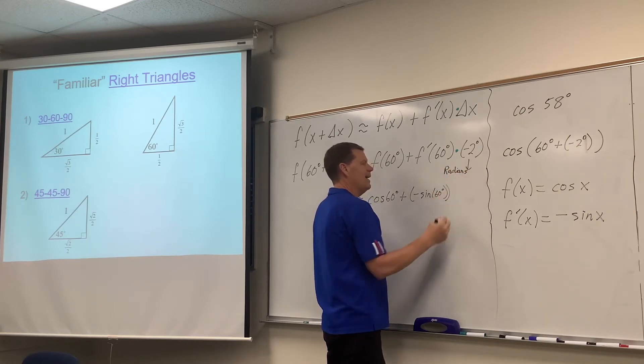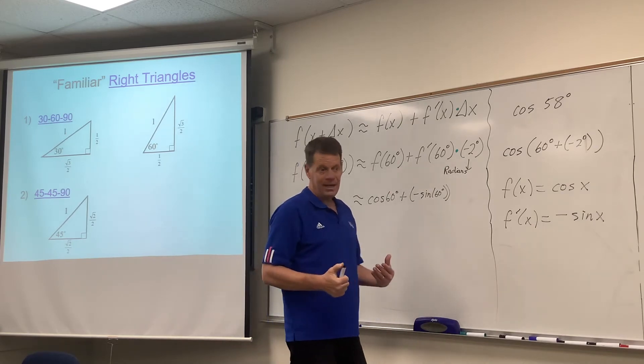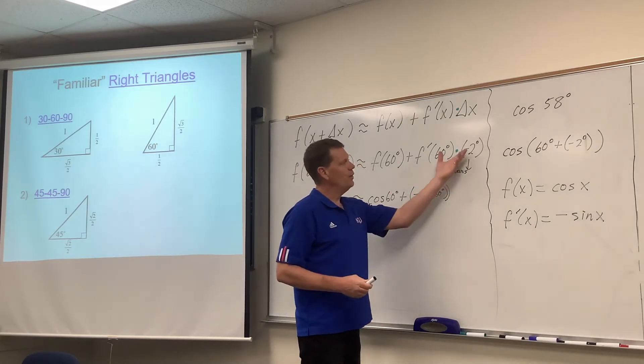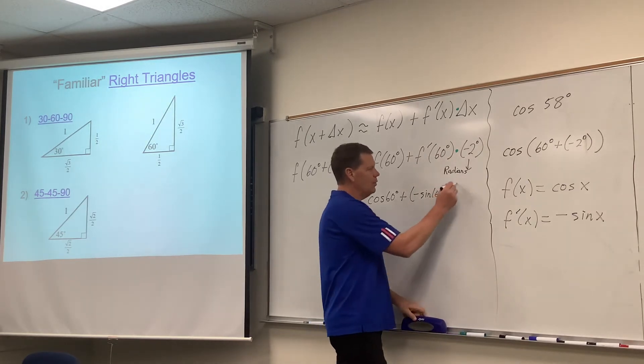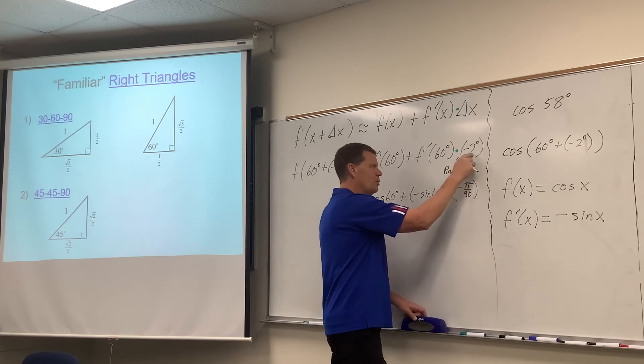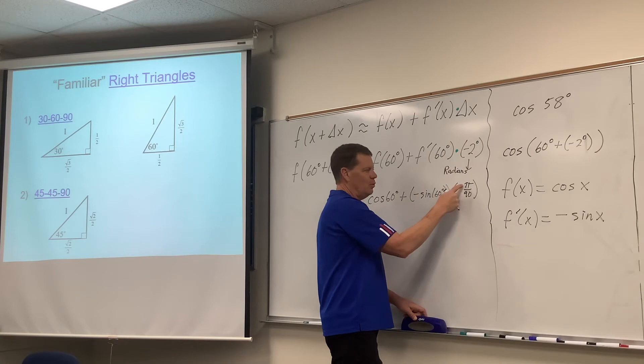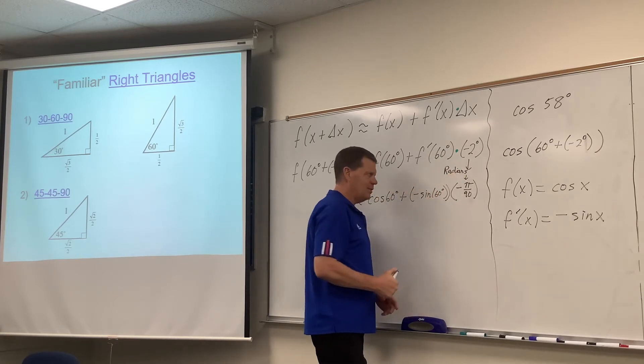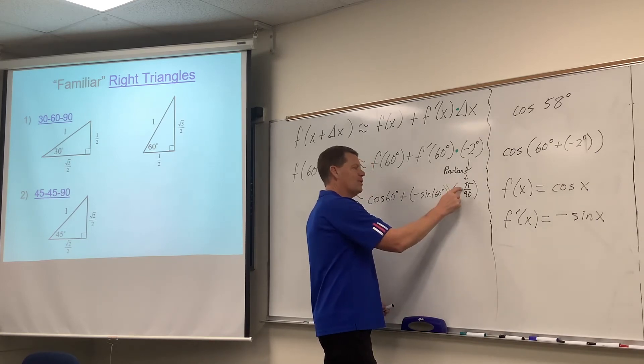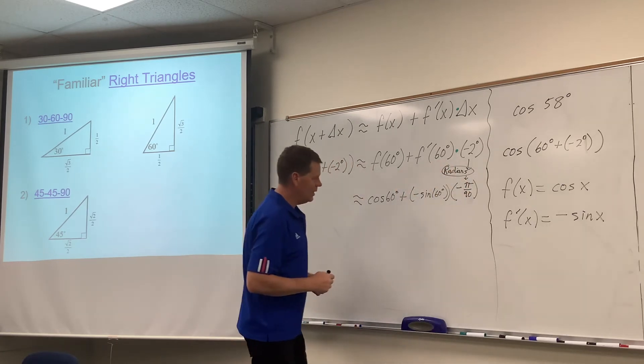And I don't have a ton of time on that, but I want to remind you that pi is 180. And so if you do proportion like we practiced a long time ago, I believe that'll end up being negative pi over 90, because 2 degrees is 1/90th of 180, so this would be 1/90th of pi. That would be an important thing to change that into radian measurement. And so when we put this in our calculator, we'll just put negative pi divided by 90 in there. So make sure on a question of this nature that you change that into radians.